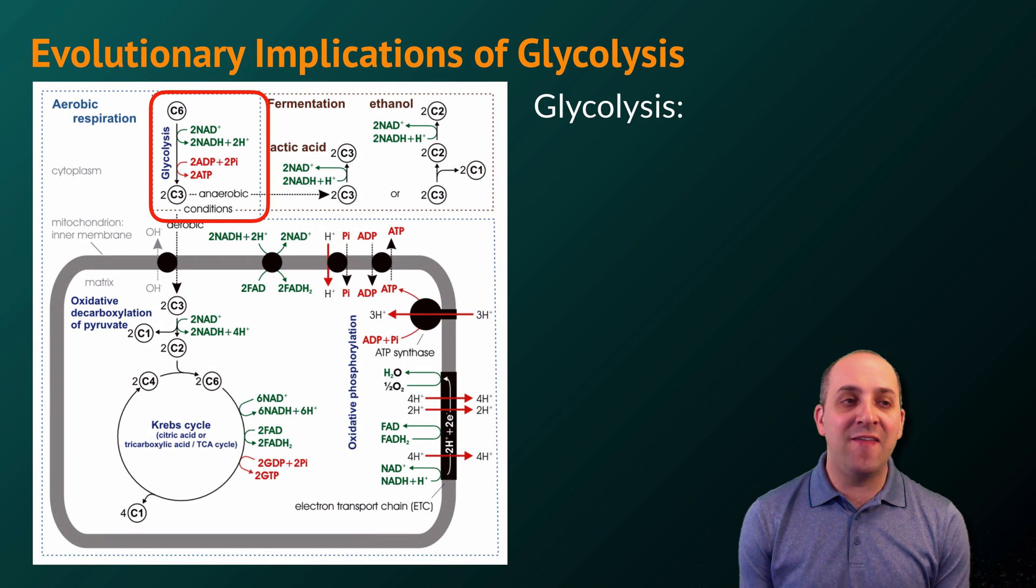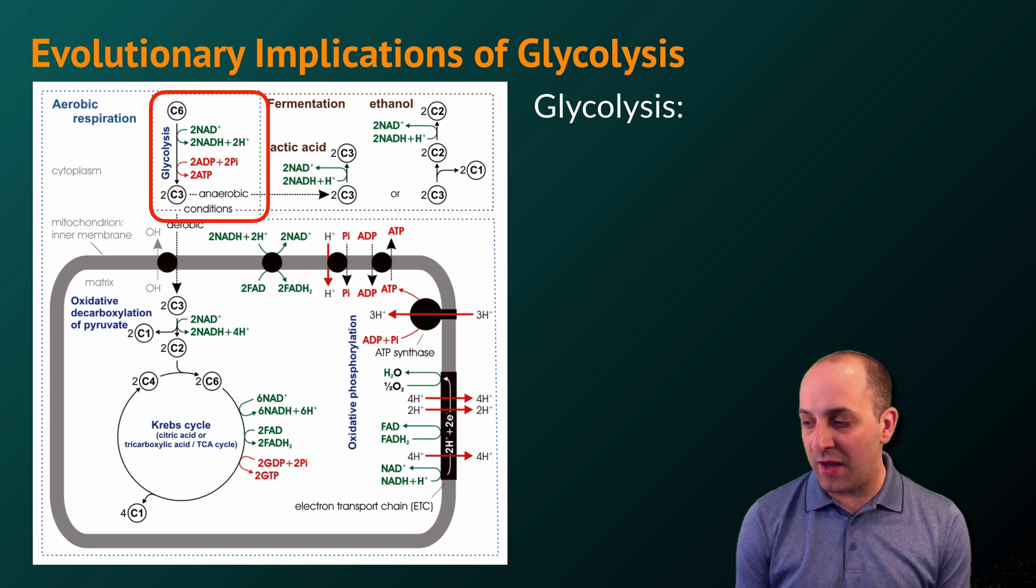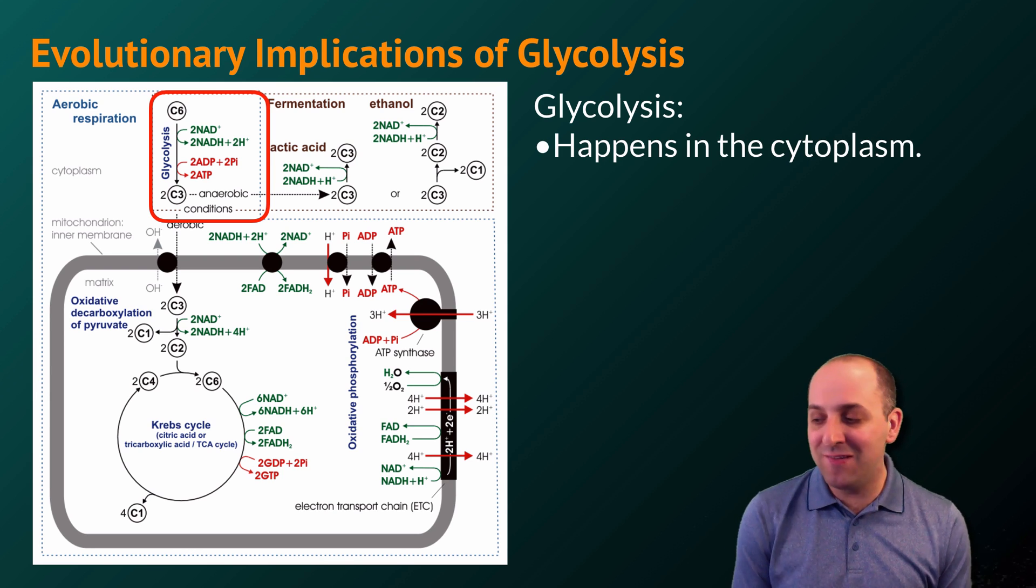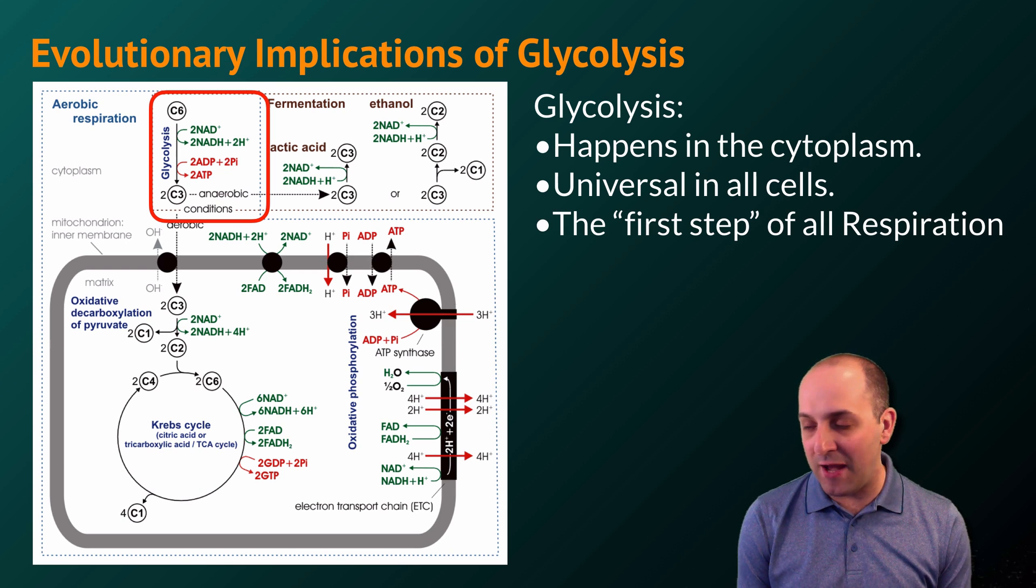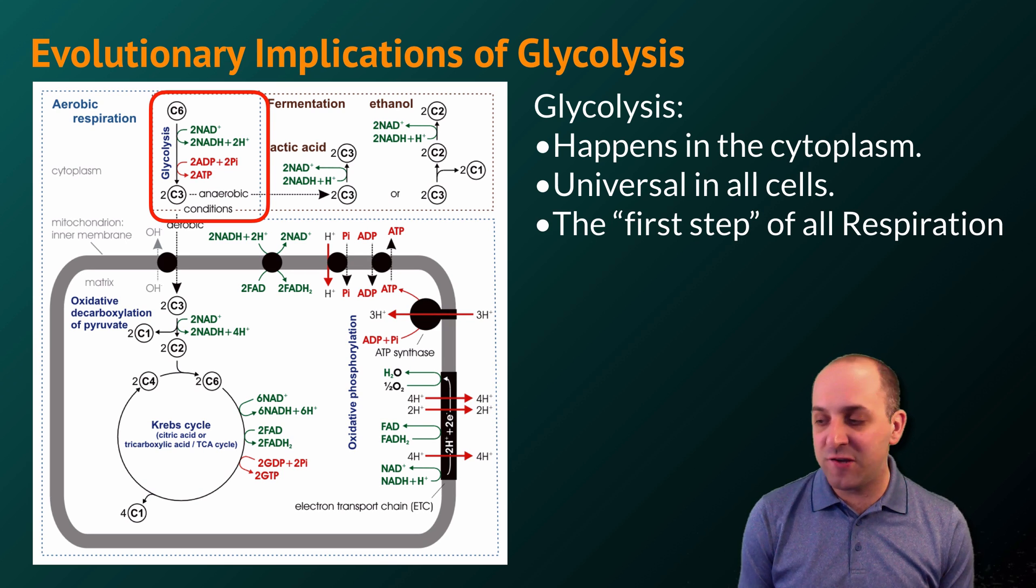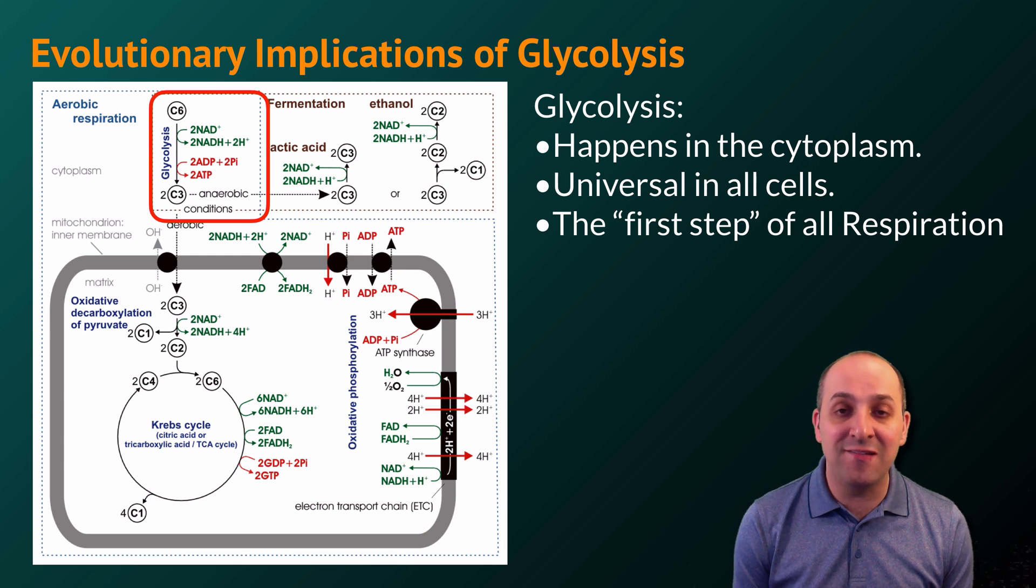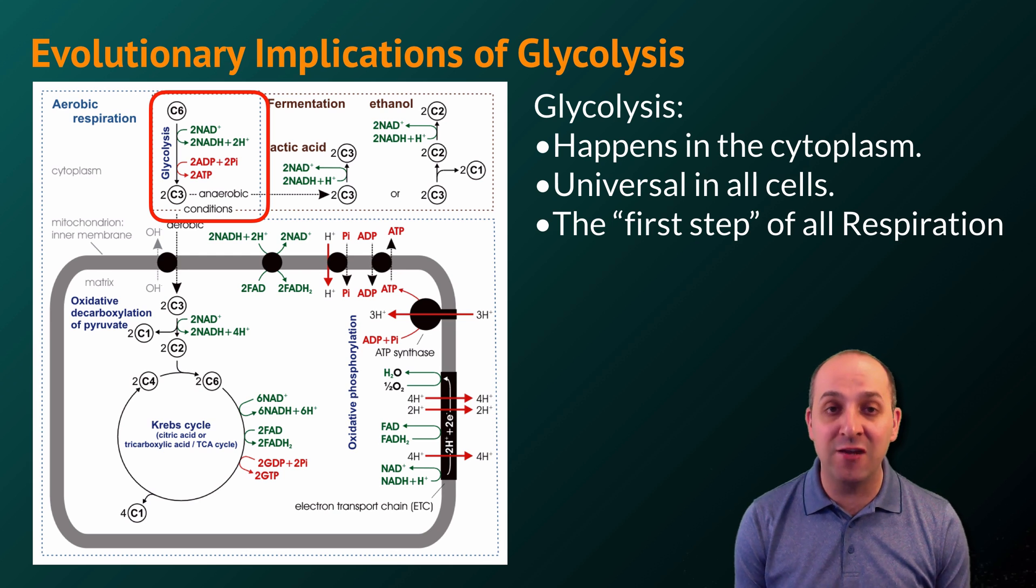It's important to understand the evolutionary implications of glycolysis. Glycolysis happens in the cytoplasm. It's found in all cells on the planet, and it also serves as the first step of all respiration. Even though glycolysis is itself anaerobic and does not require oxygen, glycolysis still happens first before aerobic cellular respiration, which we'll talk about in another video.